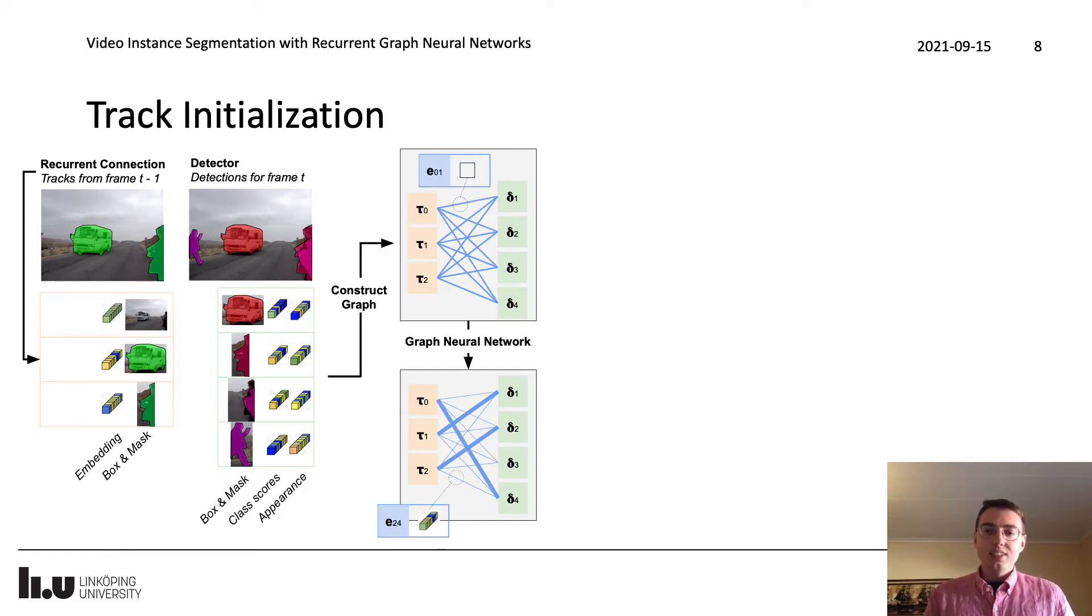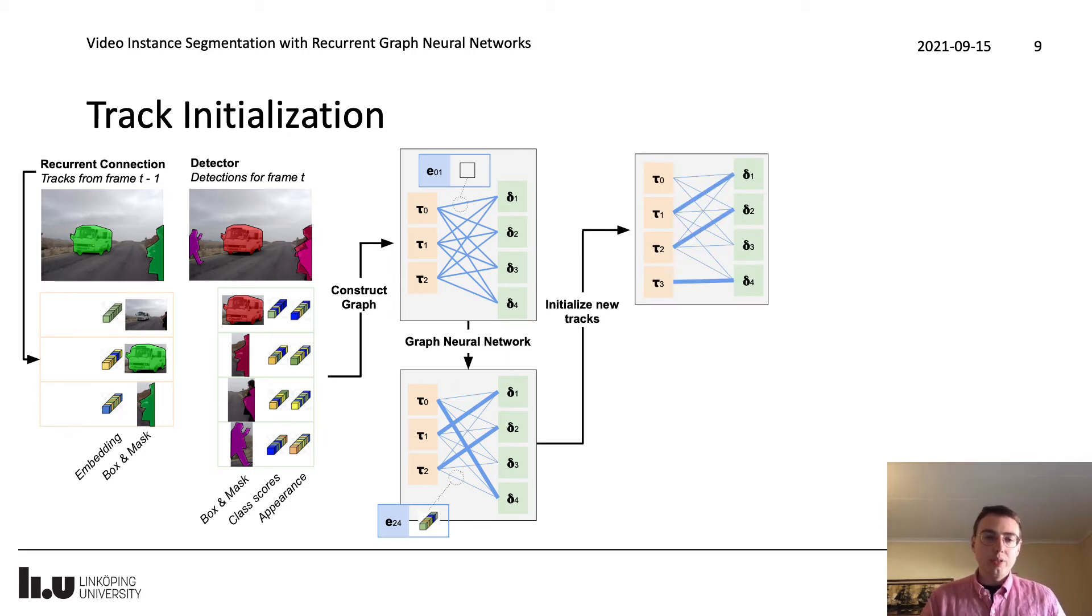Next we initialize new tracks. To this end we introduce a new empty track and this track is connected to each detection. The corresponding edge is used to predict the probability that this detection corresponds to an object for which there is yet no track. We do it in the exact same way as the track-detection matching but in the GNN this empty track is processed with a different set of weights and the final track initialization probability is predicted with a different logistic model. Here for instance the model has decided that this detection delta_4 should initialize a new track. So then we create a new track tau_3. We initialize tau_3's track embedding by directly taking the corresponding detection embedding delta_4.